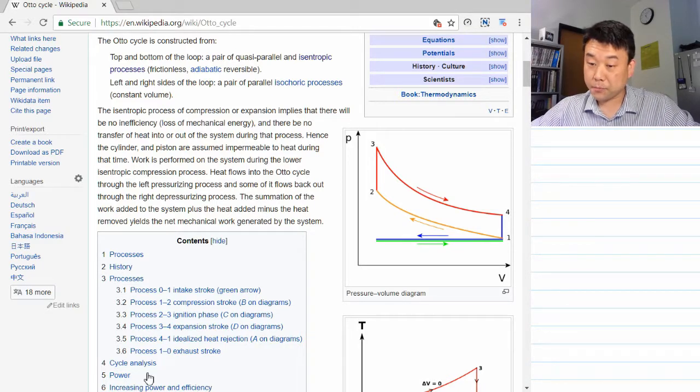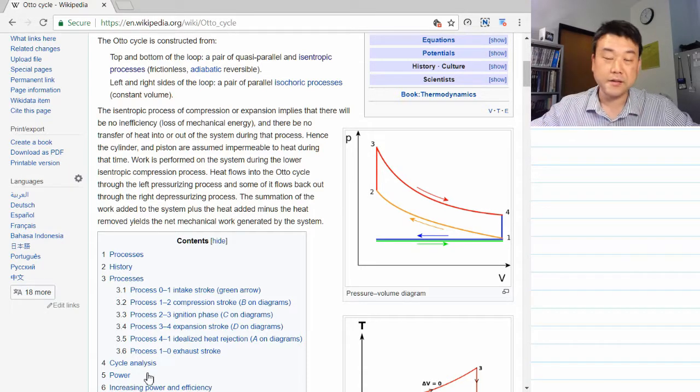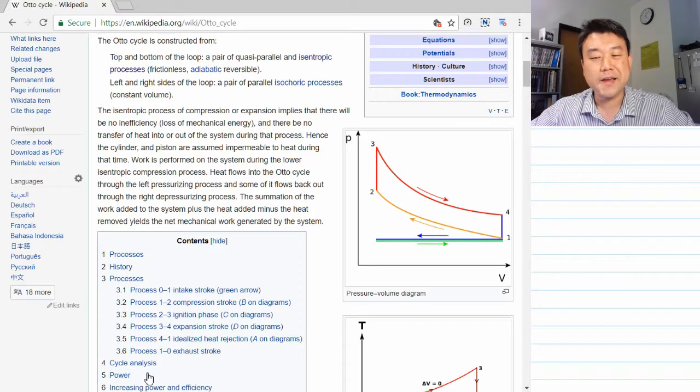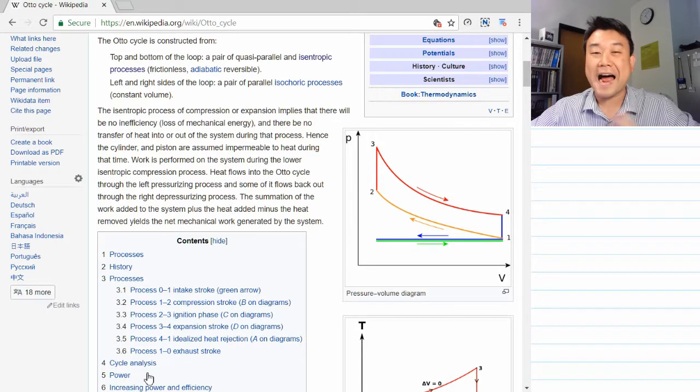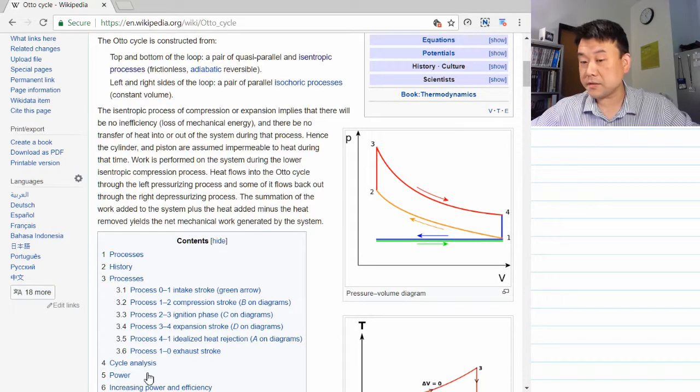And once it reaches point 4, then it needs to return to the original point somehow. In a real engine, it expels the exhaust, takes any fresh air at room temperature. We are just going to say that there's an idealized isochoric process that somehow takes the engine from 4 to 1. That completes the cycle and it's ready to do the work again.